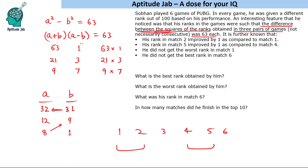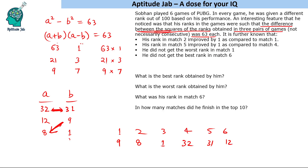Since he did not get the worst rank (32) in match 1, the pair 32 to 31 must belong to matches 4 and 5 — meaning match 4 had rank 32 and match 5 had rank 31 (improvement by 1). Therefore matches 1 and 2 have ranks 9 and 8 respectively (rank improved from 9 to 8). Since he did not get the best rank (1) in match 6, match 6 gets rank 12, and rank 1 is assigned to the remaining match.